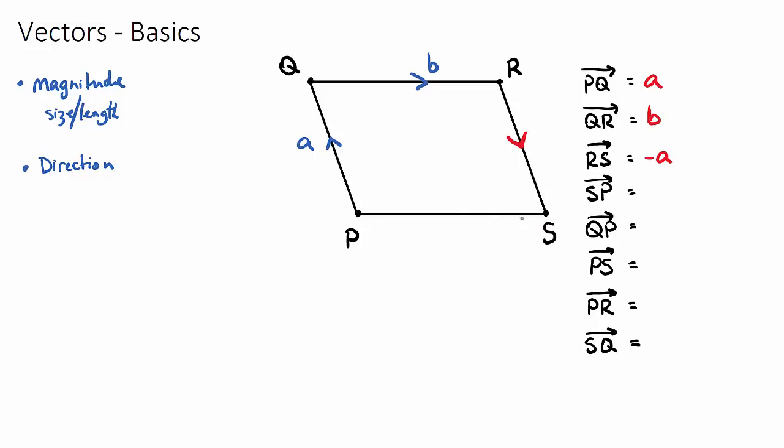And then S to P, to go from S to P, this would be the same as vector B but in the opposite direction. So this would be negative B.